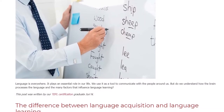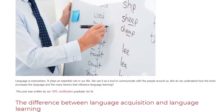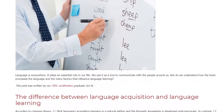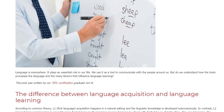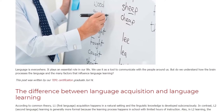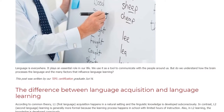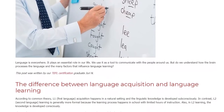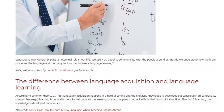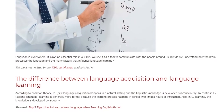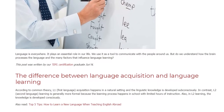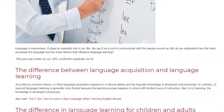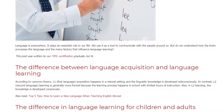The Difference Between Language Acquisition and Language Learning. According to common theory, L1 acquisition happens in a natural setting and linguistic knowledge is developed subconsciously. In contrast, L2 learning is generally more formal because the learning process happens in school with limited hours of instruction. In L2 learning, the knowledge is developed consciously.